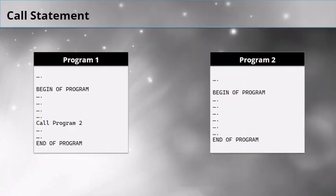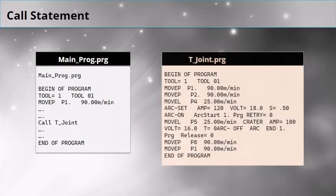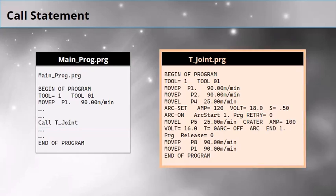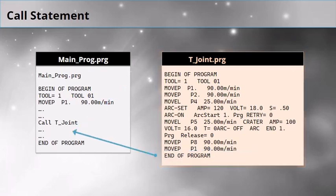A call statement transfers control from one program to another within the original program. In this example, main program has a call command. When this line executes, the robot leaves the current program and runs the t-joint program completely. When program t-joint finishes, the cursor returns to the original program, which is one line below that call statement.